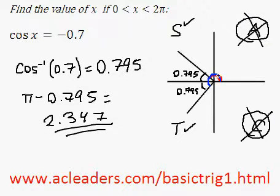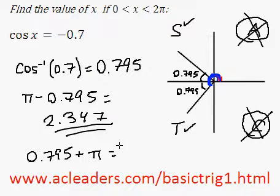So 0.795 plus π, that's going to be equal to 3.937.